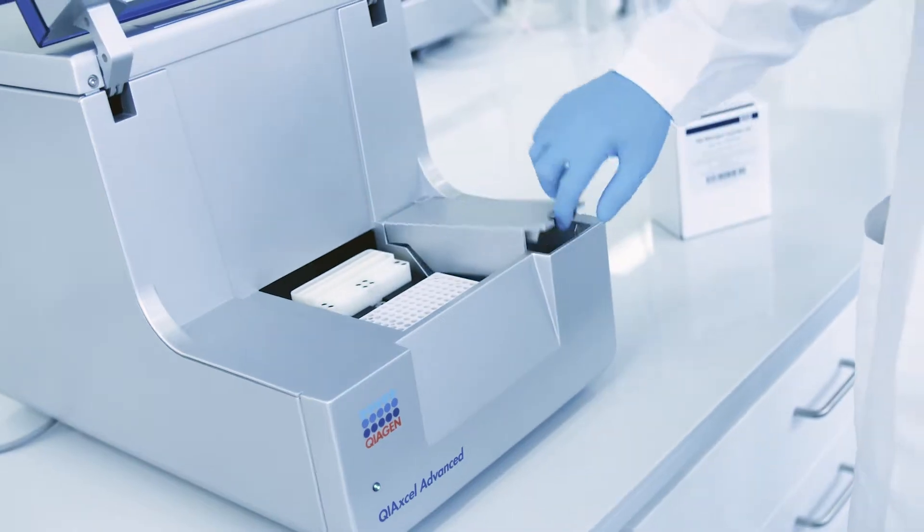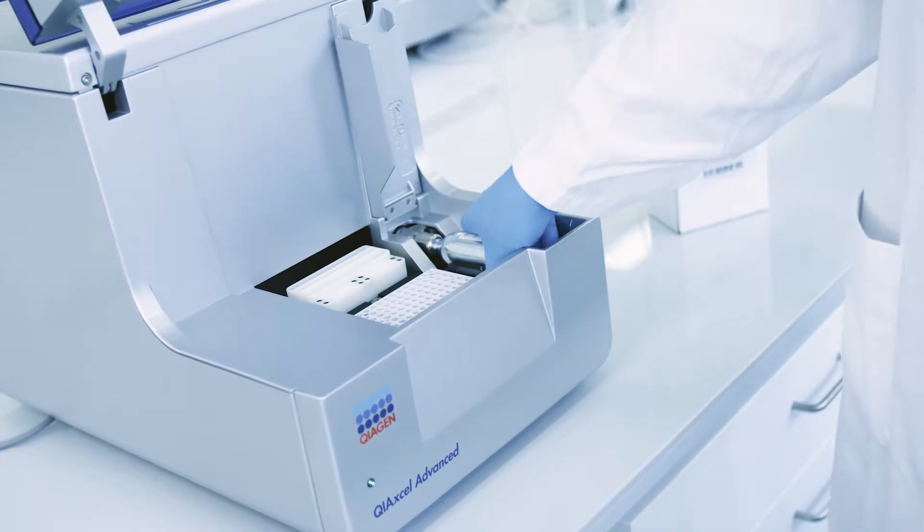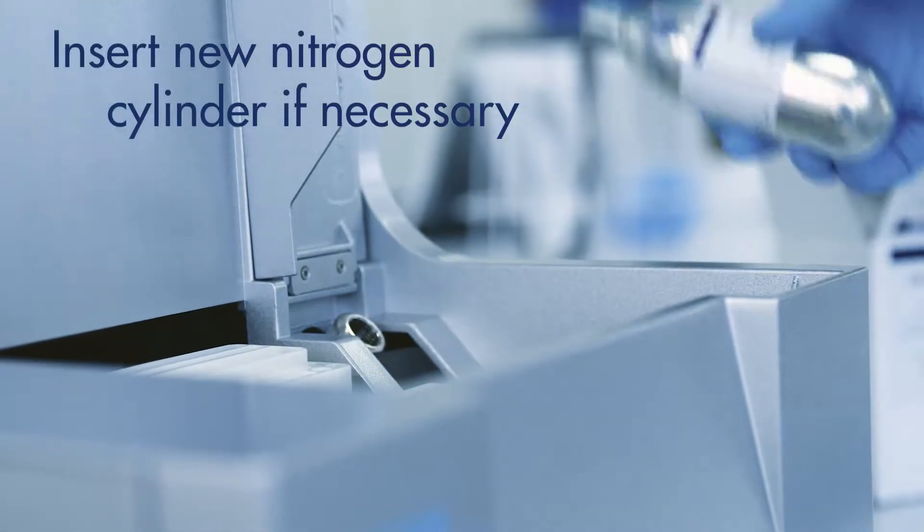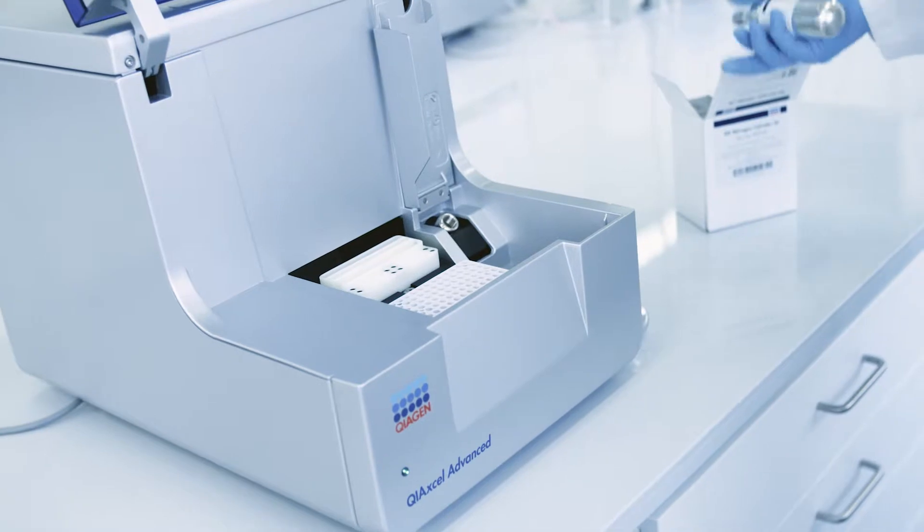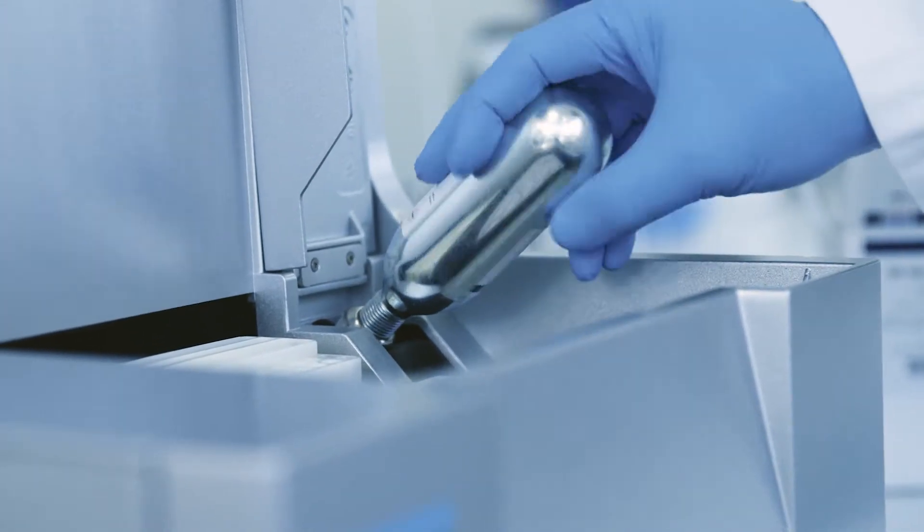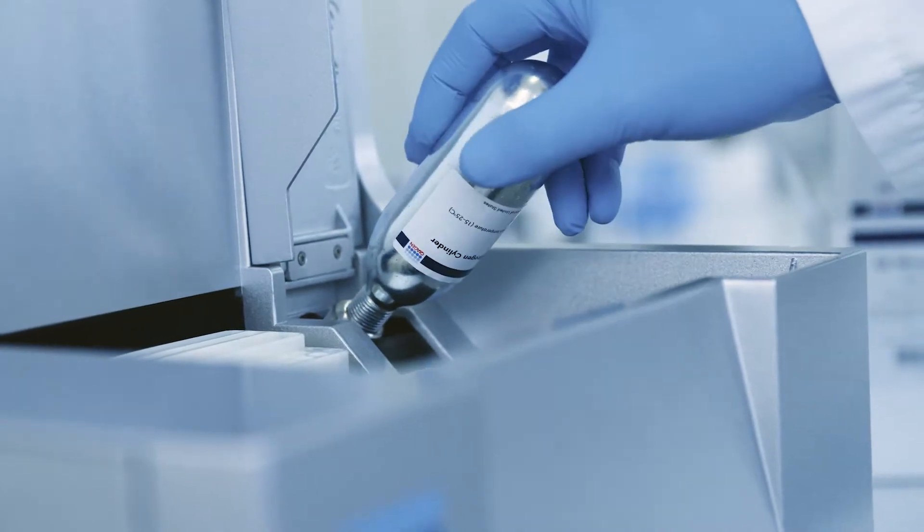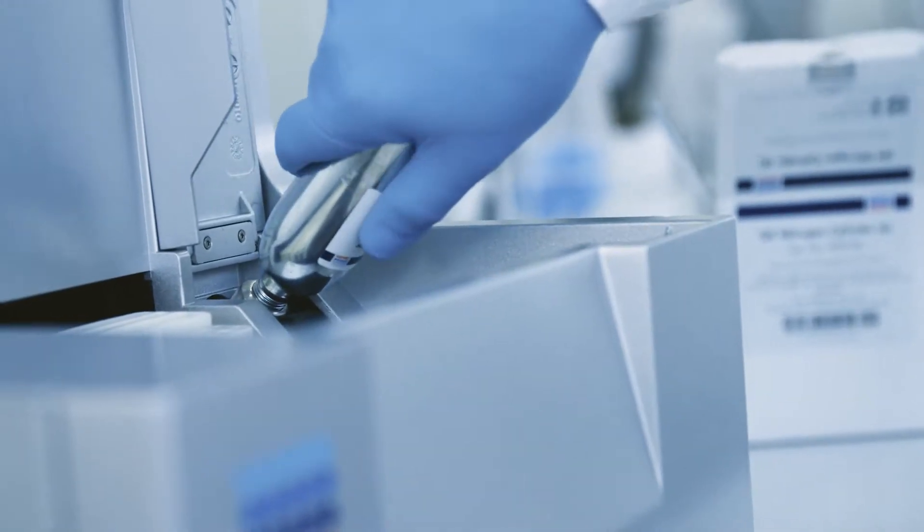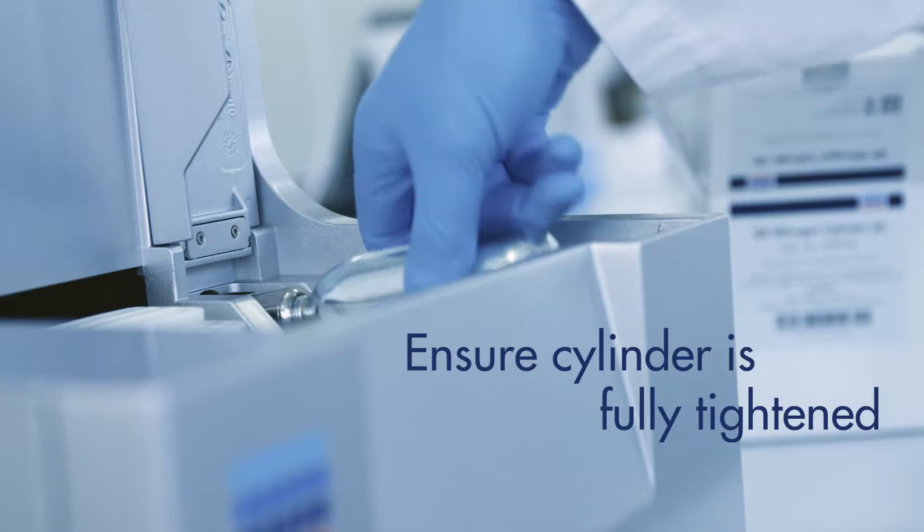Make sure that sufficient nitrogen is available. If necessary, insert a new nitrogen cylinder into the QIAXcel Advanced. It is important to ensure the bottle is tightly inserted to prevent nitrogen leaks. After the cylinder is pierced by the instrument, make sure that it is fully tightened.